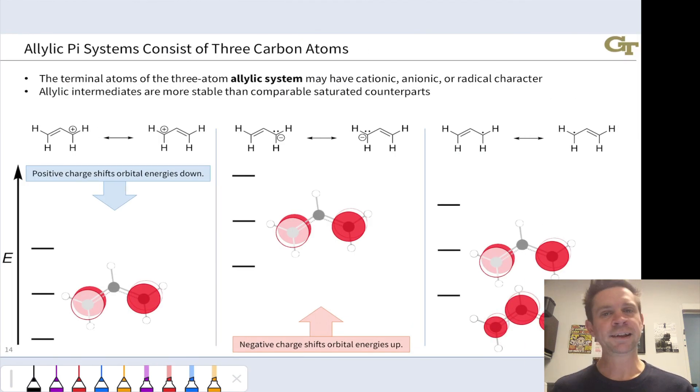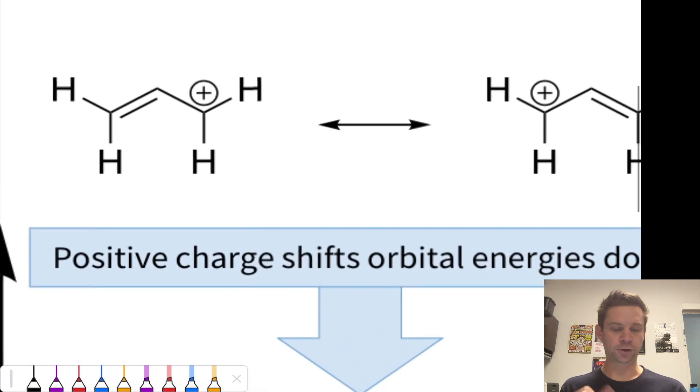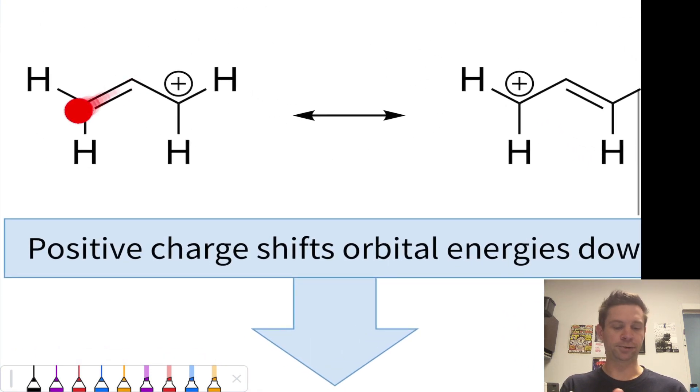An allylic system is a three-atom pi system, where two of the atoms are these two in the carbon-carbon double bond right here. And the third is either a cation, anion, or radical, one of those structural elements of delocalized pi systems, such that now we have a three-atom conjugated system here.